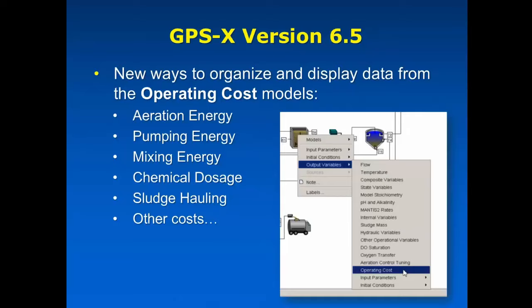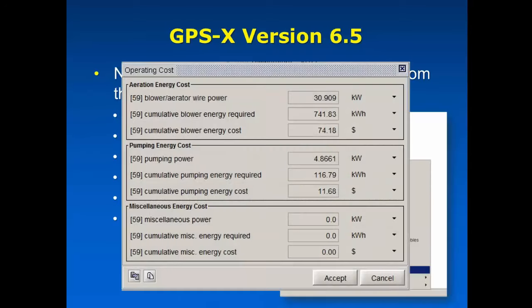So you may know that for many releases now, at least 10 years, we've had operating cost models in GPS-X and they focused around integrating and calculating and doing all of the bookkeeping on the costs for aeration, the costs for pumping, so for your RAS and your lift stations and influent pumping stations, putting those together and also looking at chemical costs and sludge disposal costs. You always were able to get that information by looking at the output variables menu of any particular unit process object and then going to the operating cost menu.